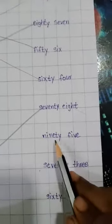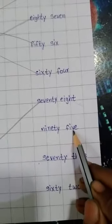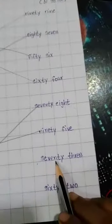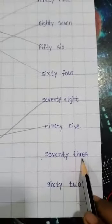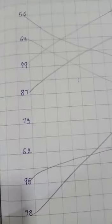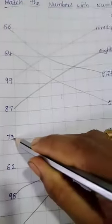N-I-N-E-T-Y ninety, F-I-V-E five, 95. Yes. S-E-V-E-N-T-Y seventy, T-H-R-E-E three, 73. Yes, yaha hai.